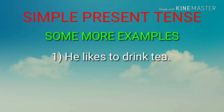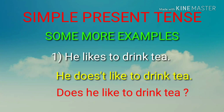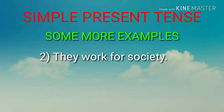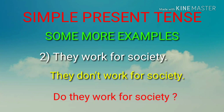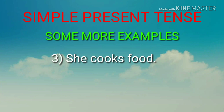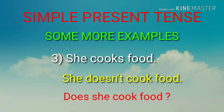Let's see some more examples with their negative and interrogative sentences. 'He likes to drink tea' — उसे चाय पीना पसंद है. Negative: 'He doesn't like to drink tea.' Interrogative: 'Does he like to drink tea?' Another example: 'They work for society' — वे समाज के लिए कार्य करते हैं. Negative: 'They don't work for society.' Interrogative: 'Do they work for society?' One more: 'She cooks food' — वे खाना पकाती है. Negative: 'She doesn't cook food.' Interrogative: 'Does she cook food?'